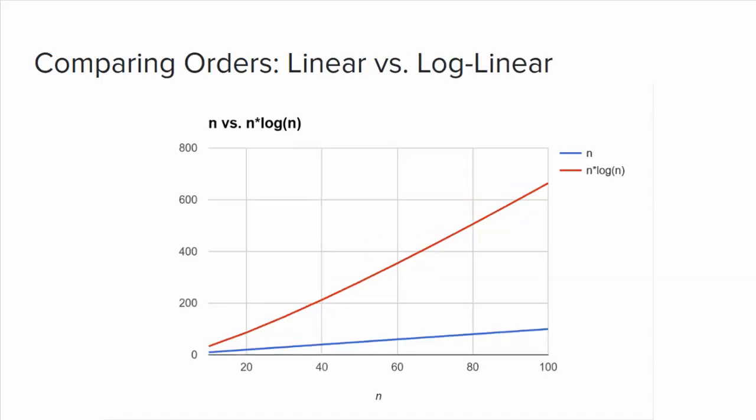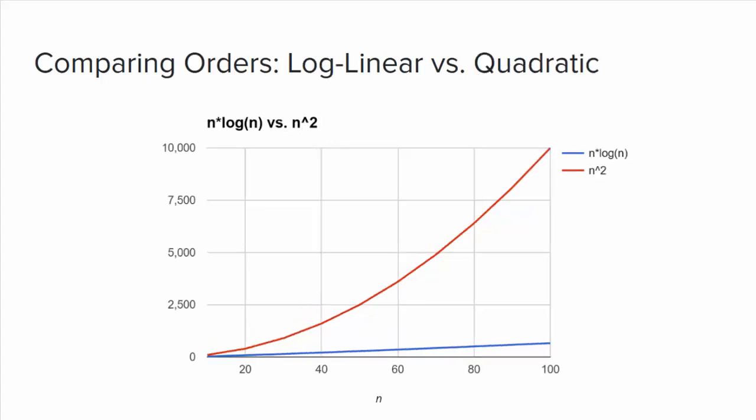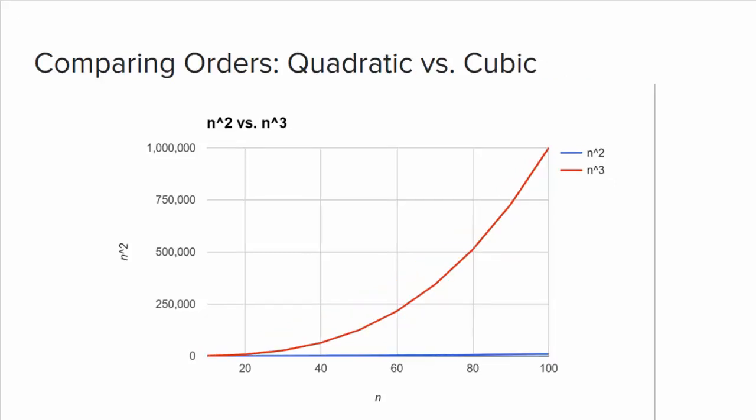Log linear algorithms grow with the product of n and log n, resulting in a very gentle upward curve. Quadratic algorithms increase with the square of n and produce this familiar distinct curve. Code for these algorithms is characterized by a pair of nested loops, where each loop's iterations depend on n. Additional levels of loop nesting creates higher orders. Three levels of loop nesting, where each loop depends on n, results in a Big-O(n³) cubic algorithm, which is clearly worse than quadratic.